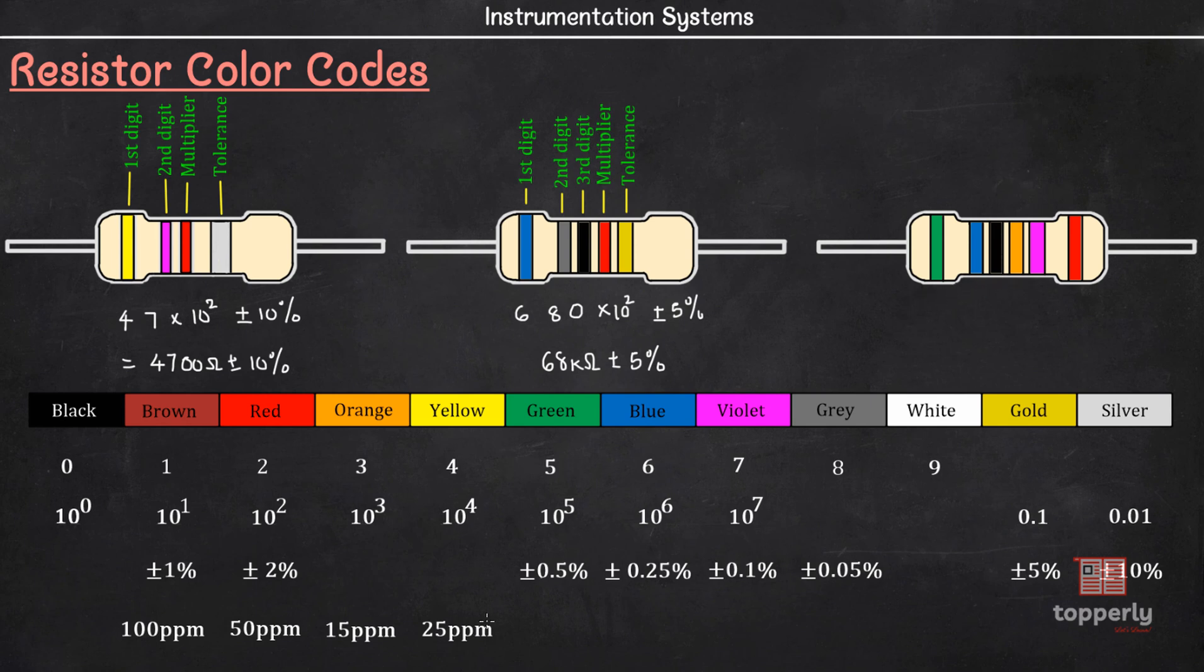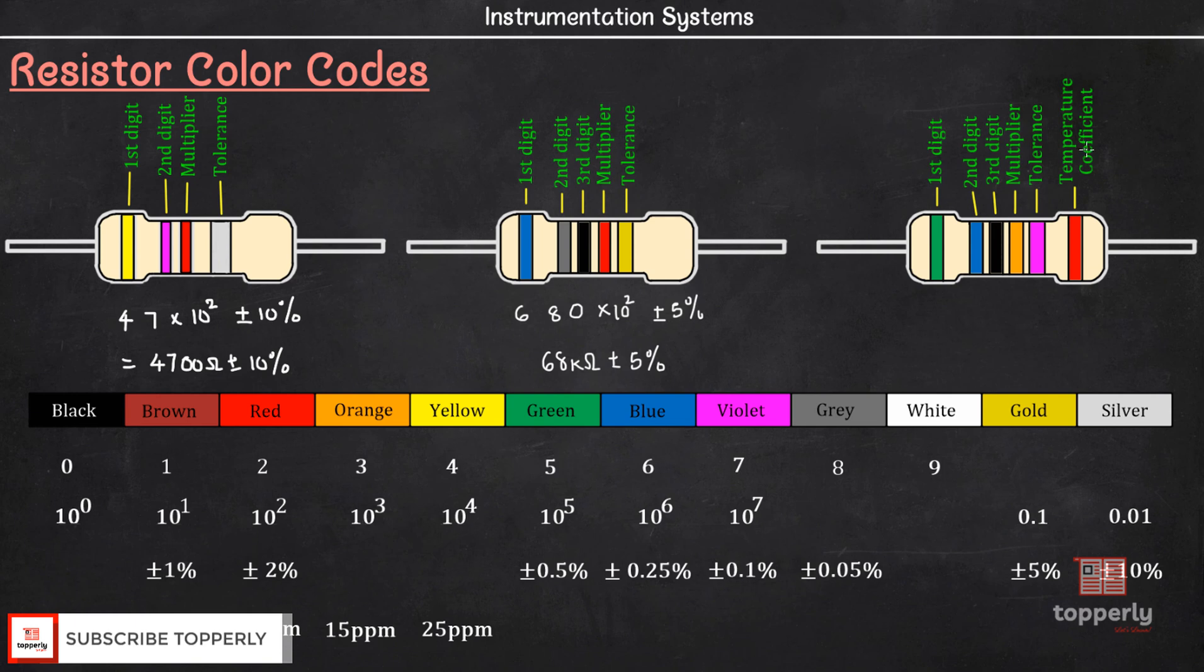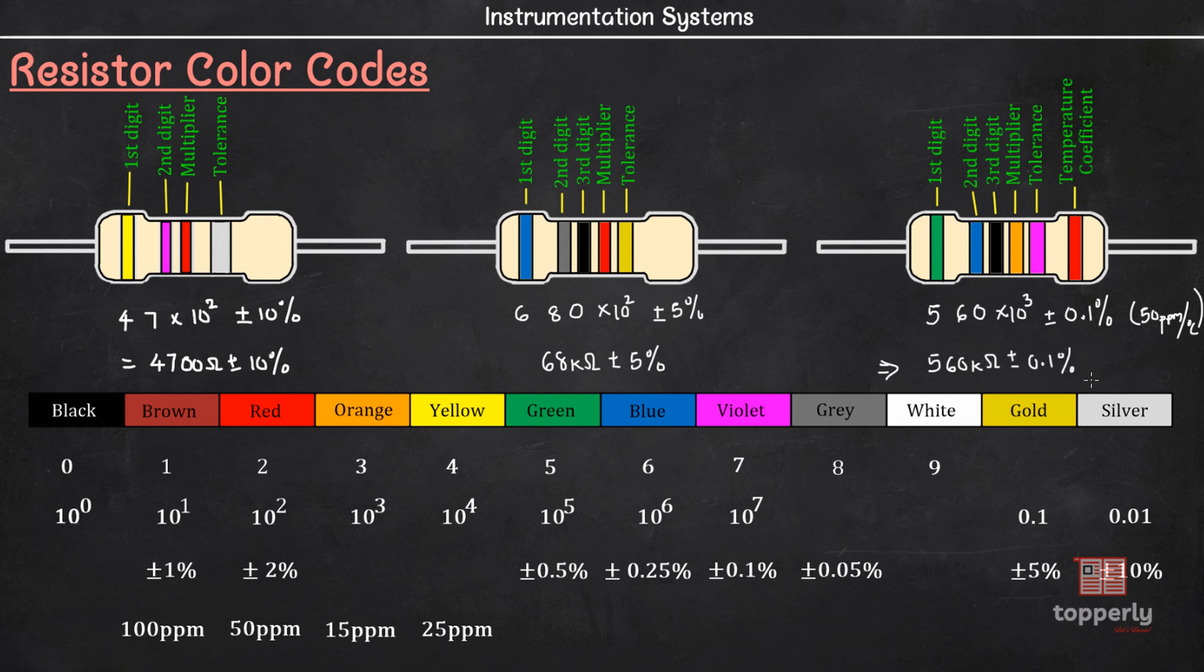Next, in the case of six bands, the additional sixth band represents temperature coefficient which is expressed in parts per million per degree celsius. So the resistance in this case is, we have green which corresponds to 5, then we have blue which corresponds to 6, then we have black which corresponds to 0, then we have the multiplier which is orange which is 10 raise to 3, then we have the tolerance which is violet which is plus or minus 0.1%. And finally the temperature coefficient which is red and is 50 parts per million. Therefore, we have 50 ppm per degree celsius. So the resistance value in this case is 560 kilo ohm plus or minus 0.1% with temperature coefficient of 50 ppm per degree celsius.